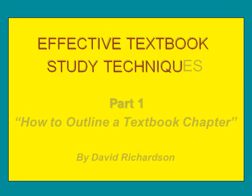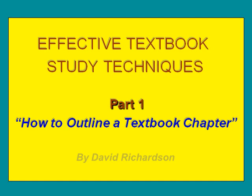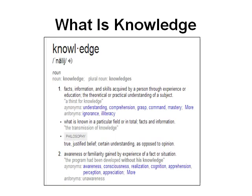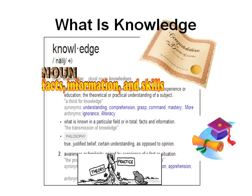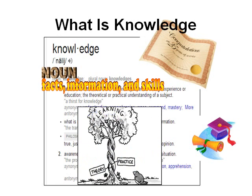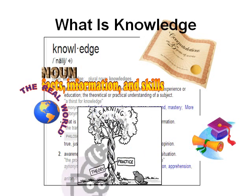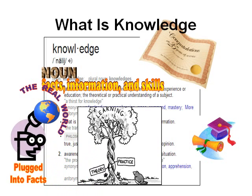Effective textbook study techniques, part one: how to outline a textbook chapter, by David Richardson. What is knowledge? Here's a dictionary definition: knowledge is a noun. It refers to facts, information, and skills acquired by a person through experience or education — the theoretical or practical understanding of a subject. It's also awareness or familiarity gained by experience of a fact or situation.